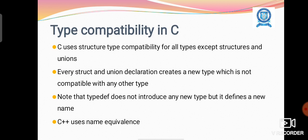In C, structure type compatibility is used for all types except structure and union. Every struct and union declaration creates a new type which is not compatible with any other type.